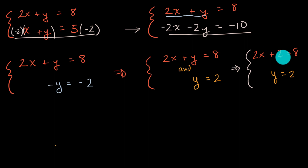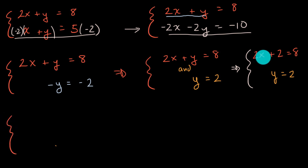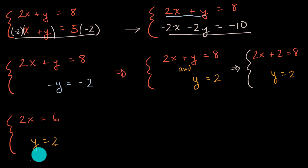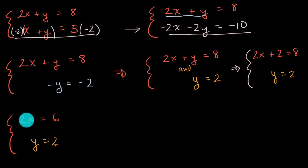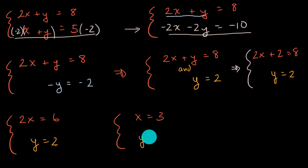We can continue with equivalence-preserving operations on that top equation. Subtracting 2 from both sides gives 2x equals 6, with y equals 2 unchanged. Then dividing both sides of the top equation by 2 — dividing by a non-zero value is equivalence-preserving — gives x equals 3 and y equals 2.